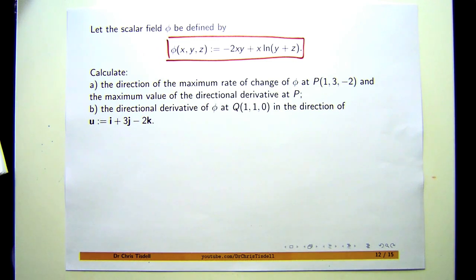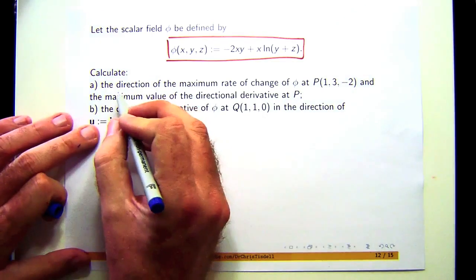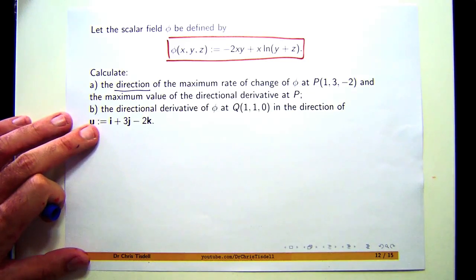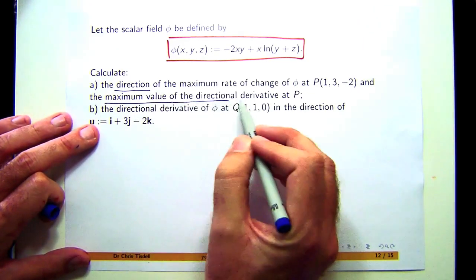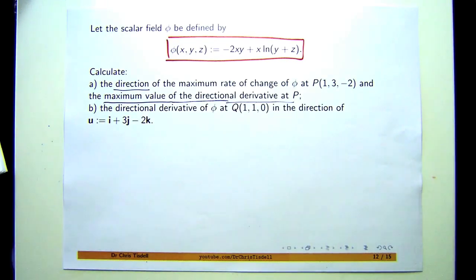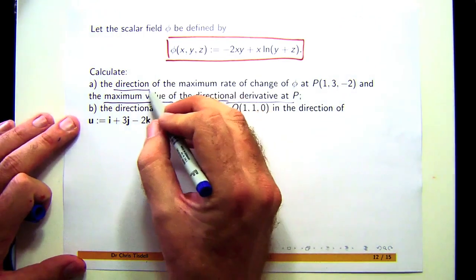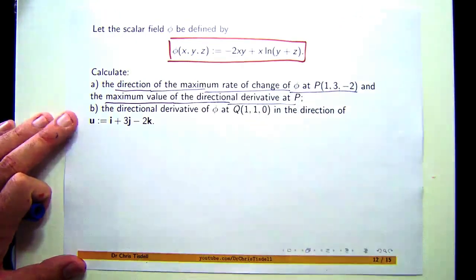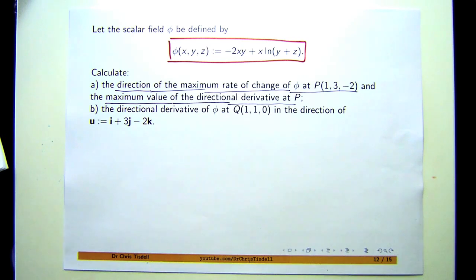We're asked to compute or calculate the direction, so we're looking for a direction here, which you can use a vector to show that direction. The direction of the maximum rate of change of φ at a point, and the maximum value of the directional derivative at that point. So in the first instance, we're looking for a direction, and in the second part, we're looking for the maximum value of the directional derivative.